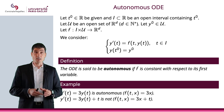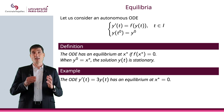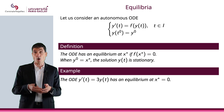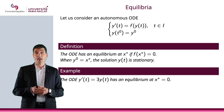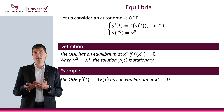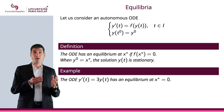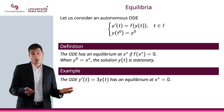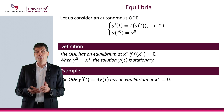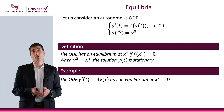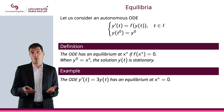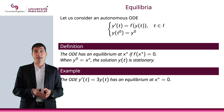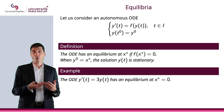Now that we have defined an autonomous ODE, written as y' of t equals f of y of t, let me define the equilibrium x star of that ODE. That will be an x star such that f of x star equals 0. A natural example is y' equals 3y, so f of x equals 3x, and 3x equals 0 is equivalent to x equals 0, which means x star equals 0.